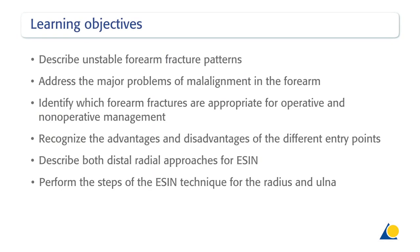Upon completion of this exercise you should be able to: describe unstable forearm fracture patterns; address the major problems of malalignment in the forearm; identify which forearm fractures are appropriate for operative and non-operative management; recognise the advantages and disadvantages of the different entry points; and describe both distal radial approaches for Essin and perform the steps of the Essin technique for the radius and ulnar.